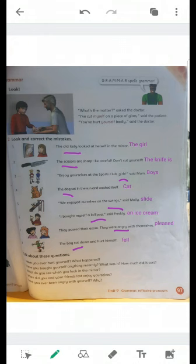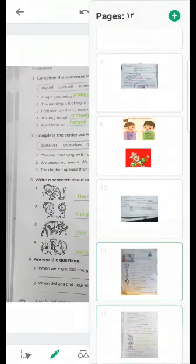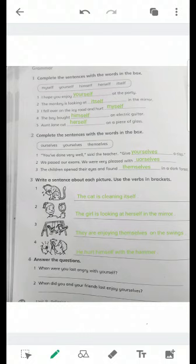Now let's go to the workbook exercises page 85. Exercise number one, complete the sentences with the words in the box. Myself, yourself, himself, herself, itself, singular.